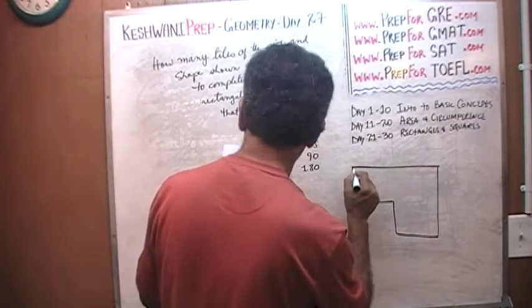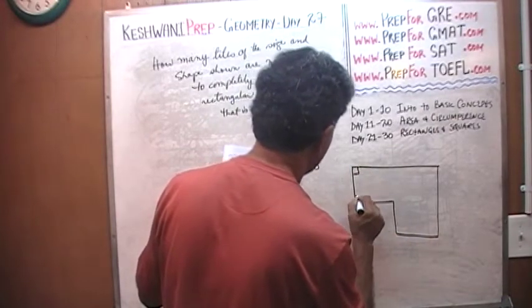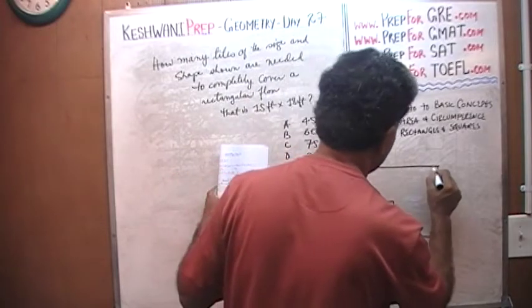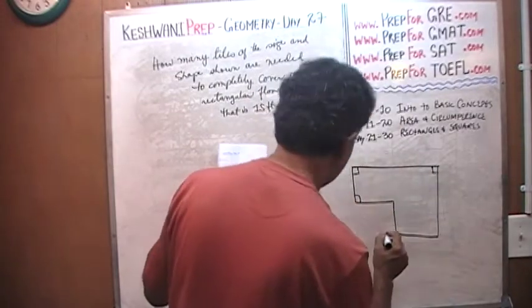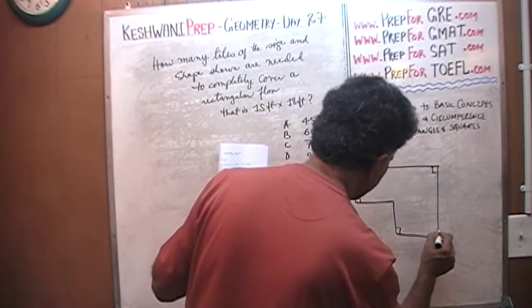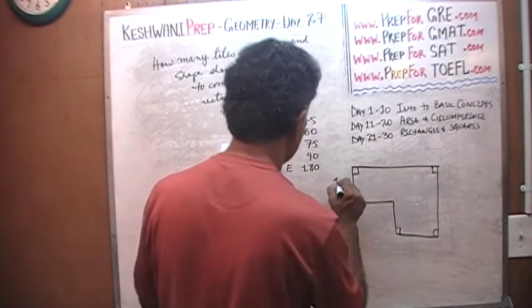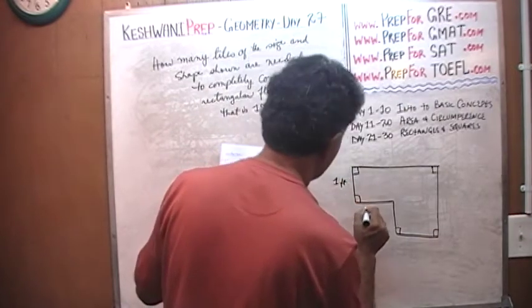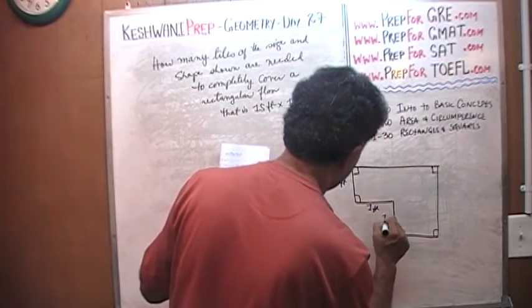Okay, we are told that this is a right angle, this is a right angle, this is a right angle, this is a right angle, this is a right angle. And then we are told that this is one foot, this is one foot, this is one foot.